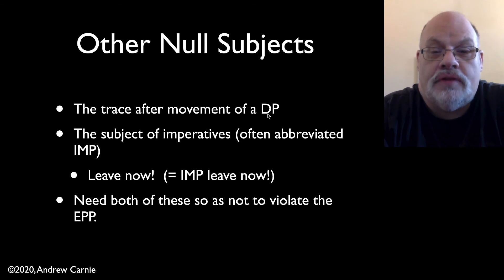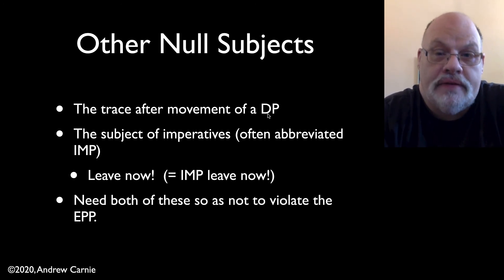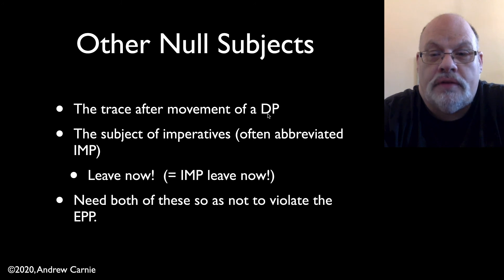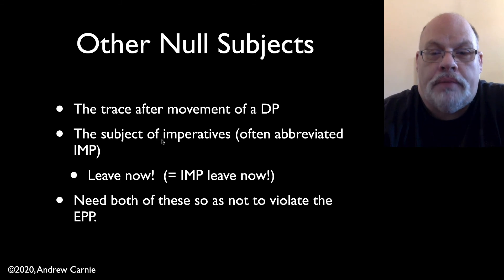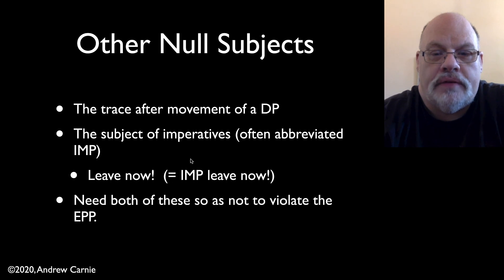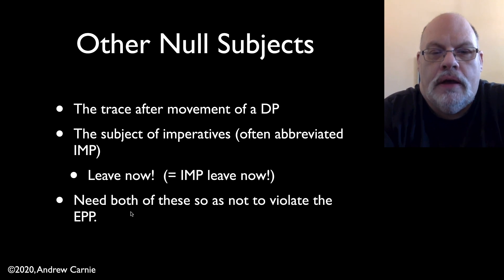Another example is the subject of imperatives. If you say something like 'leave now,' there's no subject, but there is an implied second person subject. We propose a null subject category to appear in the specifier of TP in these forms as well. We often abbreviate it as IMP for imperative. Imperatives are commands, so 'leave now' is really IMP leave now, but this IMP is null. This particular form is inherently second person and can be plural or singular. Just as we need Big Pro and Little Pro for the EPP, we need these traces and IMP to deal with the EPP as well.